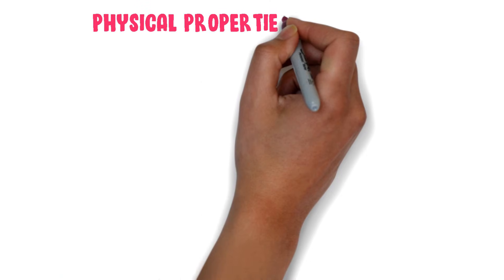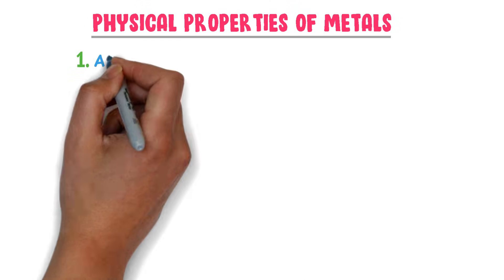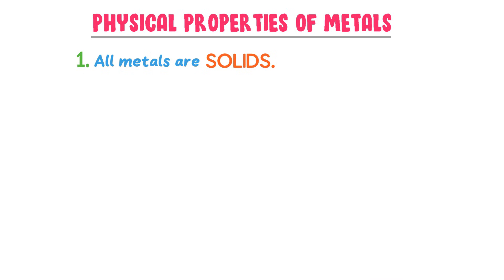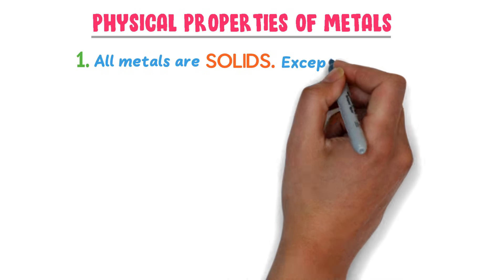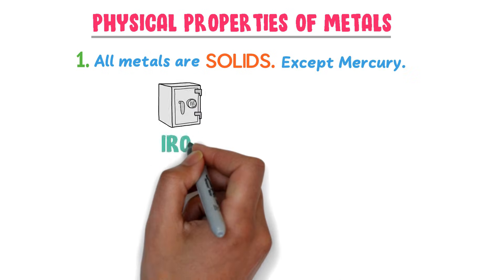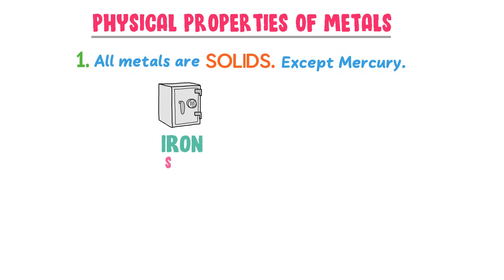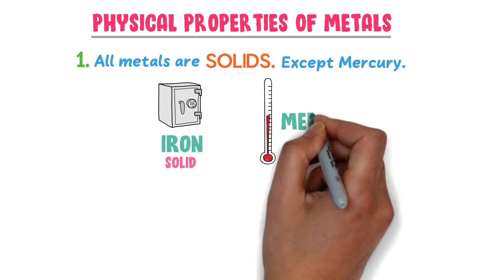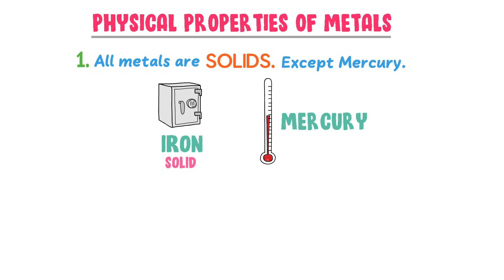What are the physical properties of metals? Well, all metals are solid at room temperature except mercury. For example, iron is a metal and solid at room temperature, while the mercury we use in thermometers is a metal and liquid.